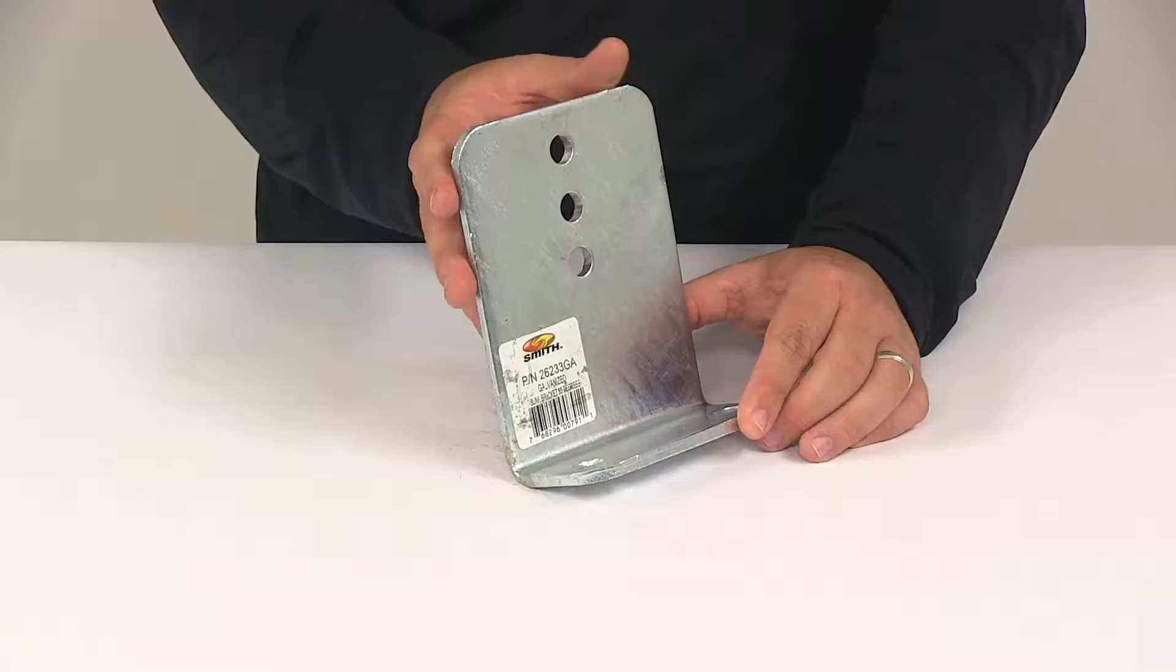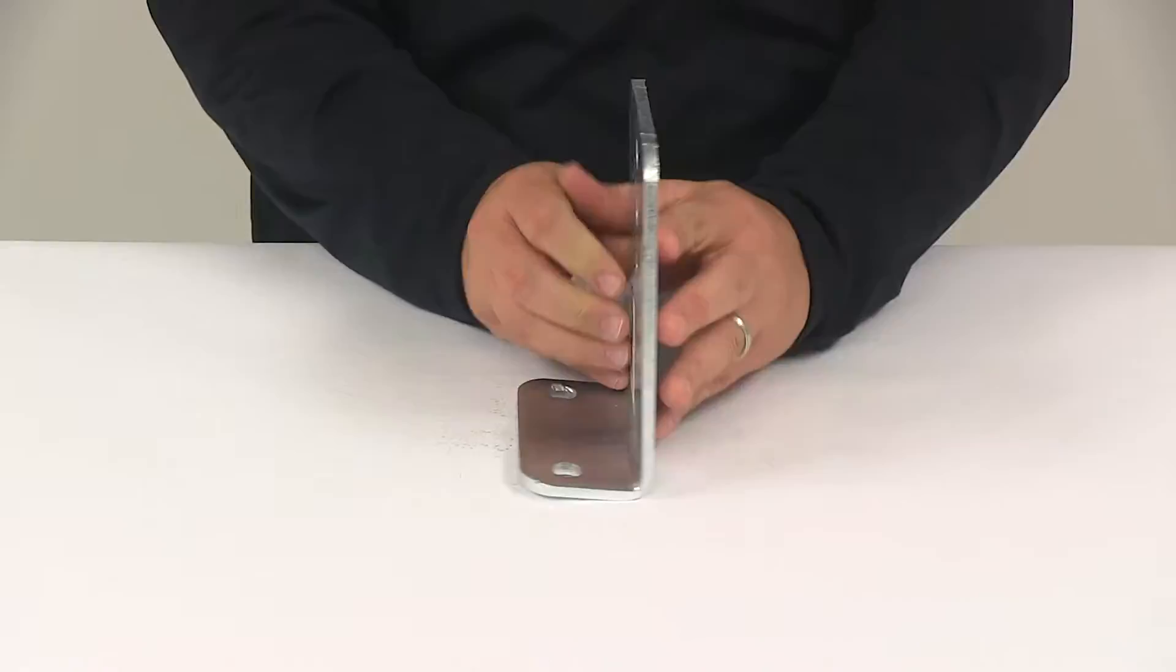It stabilizes one end of the bunk board when used with a 95 degree vertical bunk bracket. That is sold separately and available at eTrailer.com.